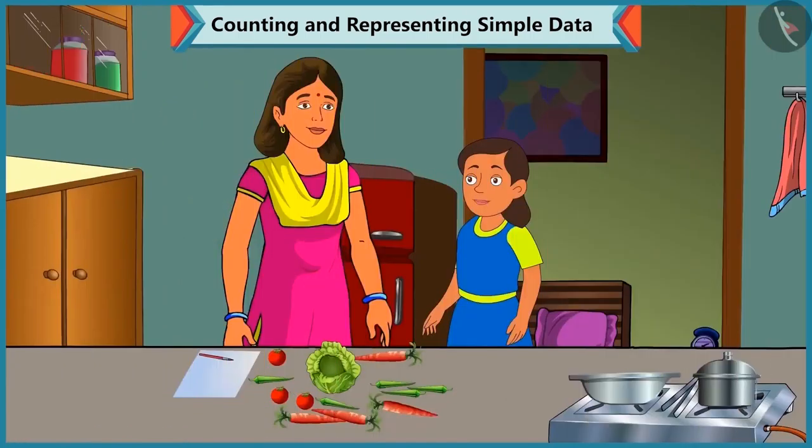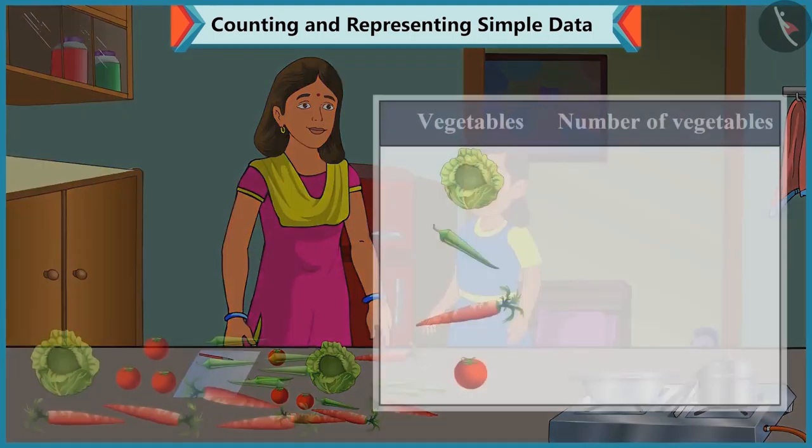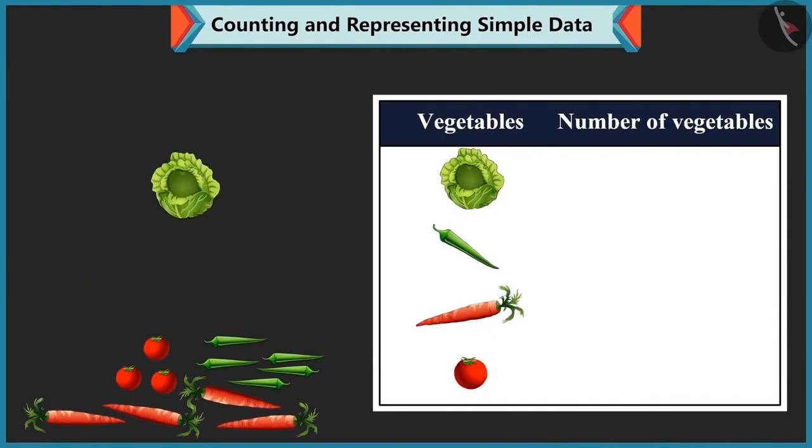Mummy, can I help you in grouping the vegetables? Yes, Bubbly. See, number of cabbages is 1 over here. So, we write 1 in front of cabbage.